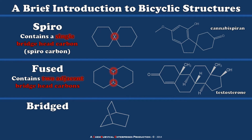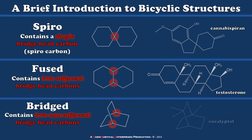Finally, we have bridged bicyclics, and bridged bicyclics are characterized by having two non-adjacent shared carbons, or two non-adjacent bridgehead carbons. An example of a scaffold which looks like this would be the molecule eucalyptol. All of these molecules shown so far are fairly powerful, biologically active molecules — things we want to understand. It is their unusual bicyclic or polycyclic scaffold that gives them some of their properties.